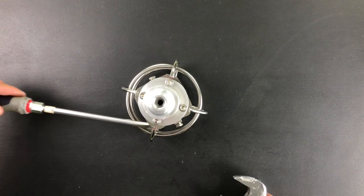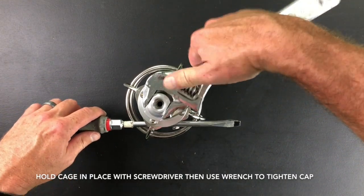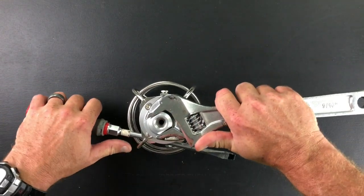Step seven, securing the swivel cap to the mounting plate. Place a long screwdriver through the opening of the cage to hold it in place, then use a wrench to secure down the cap tightly.